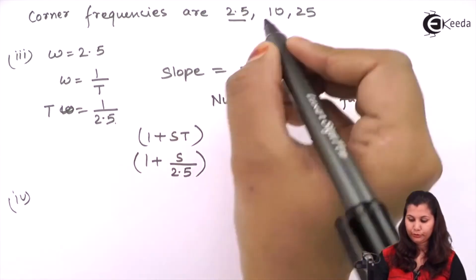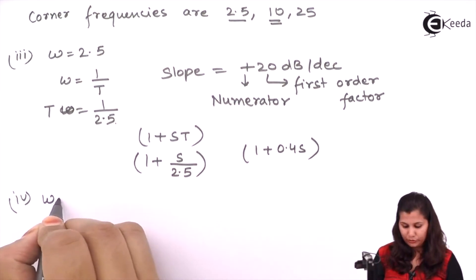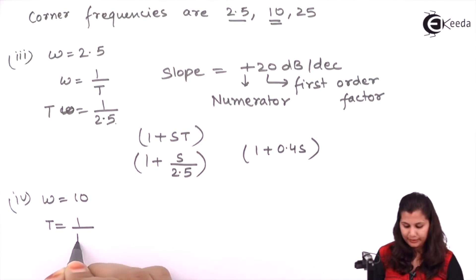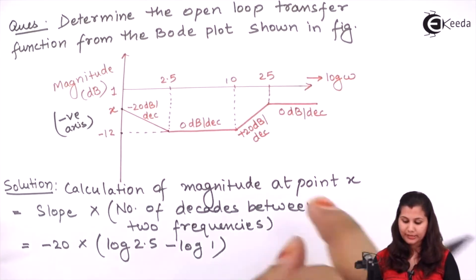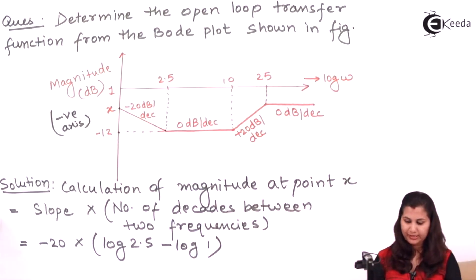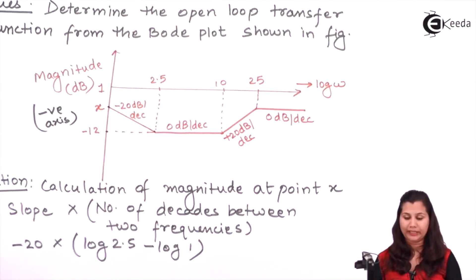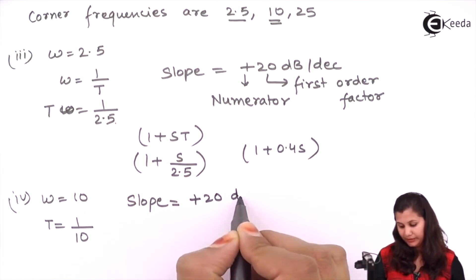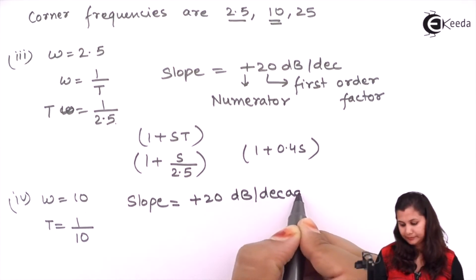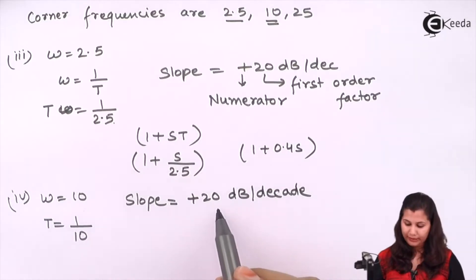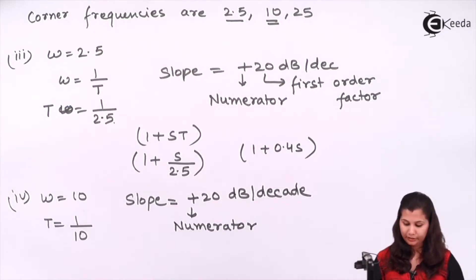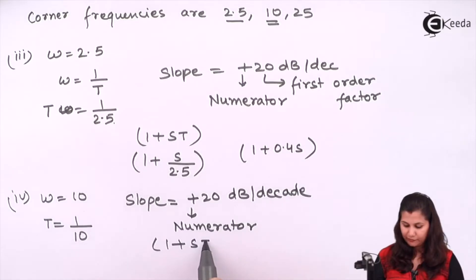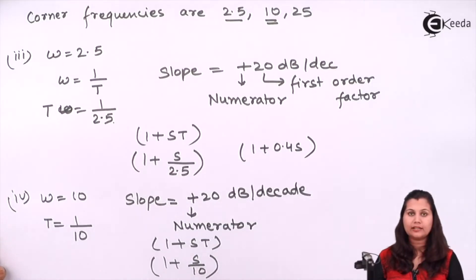At ω = 10, the time constant T = 1/10. The slope was previously 0 dB per decade and now becomes plus 20 dB per decade, so the slope change is again plus 20 dB per decade. Positive means it is in the numerator, and first-order, so this factor is represented as (1 + s/10).